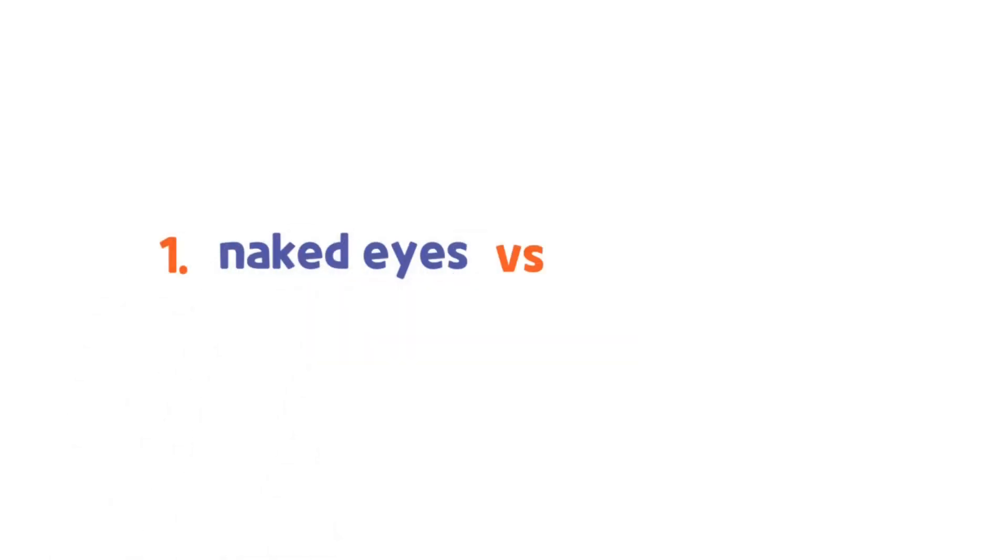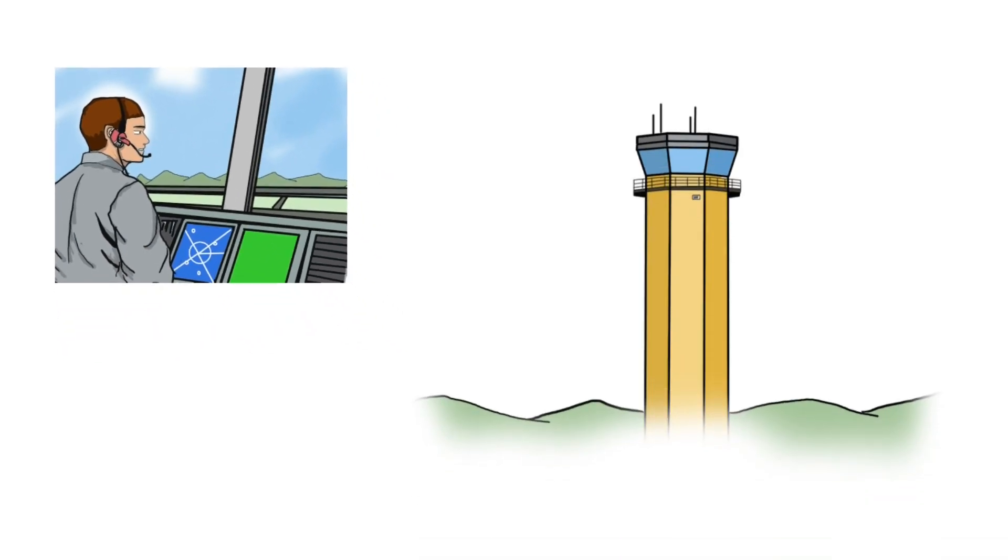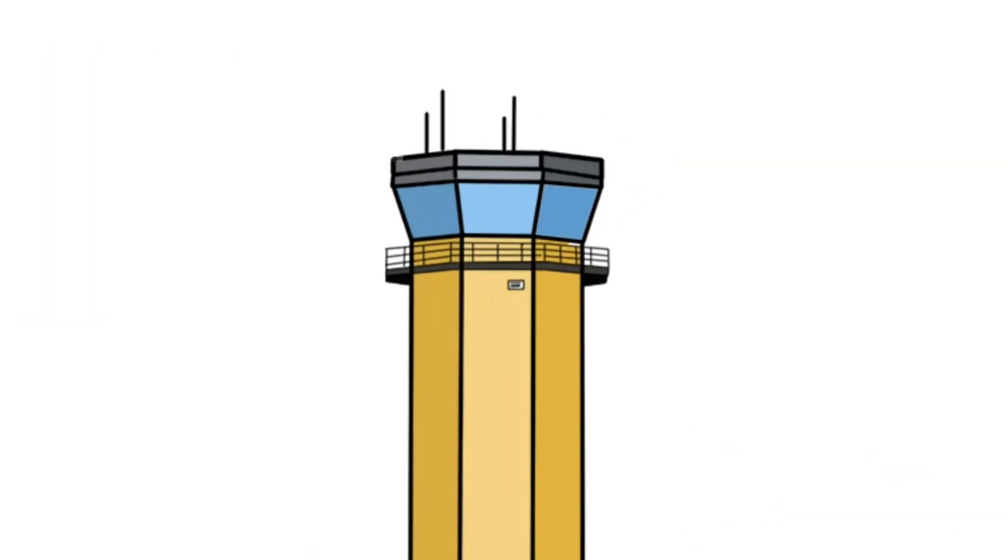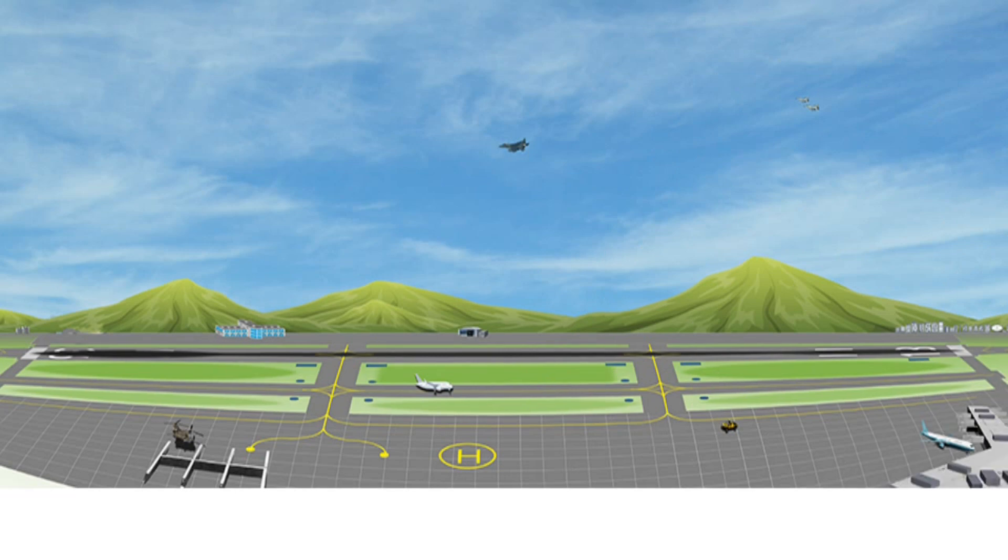Naked eyes versus radar scope. The tower controller works at the control tower. The control tower is located at the highest place of the airport and all sides are made of glass windows, so controllers can see everywhere.